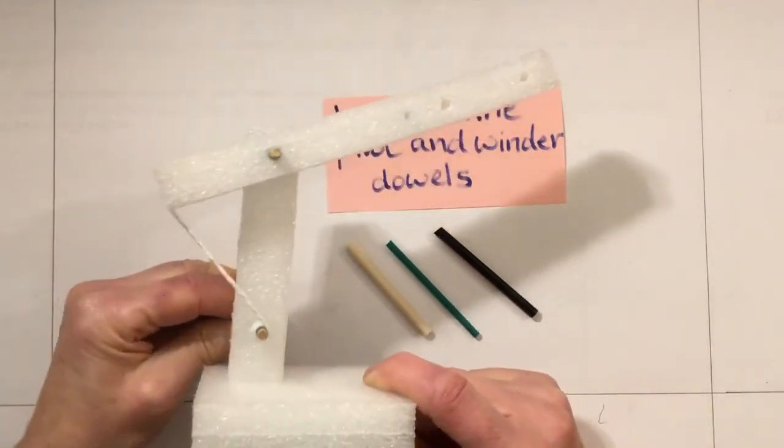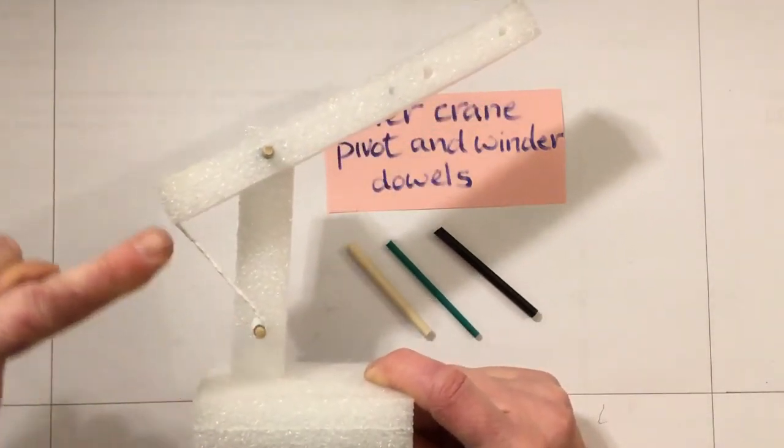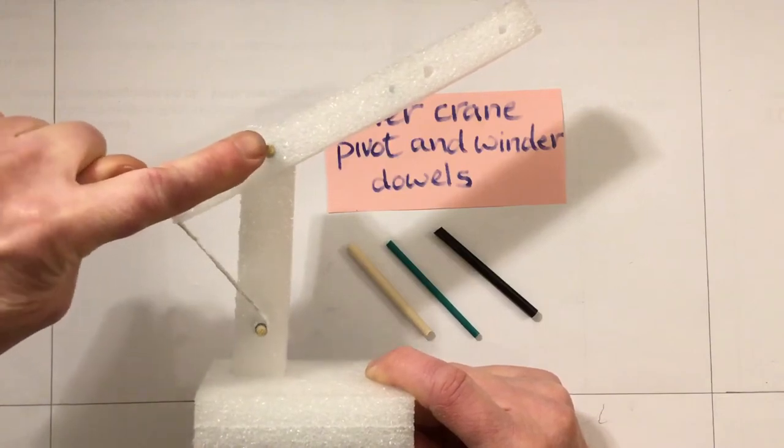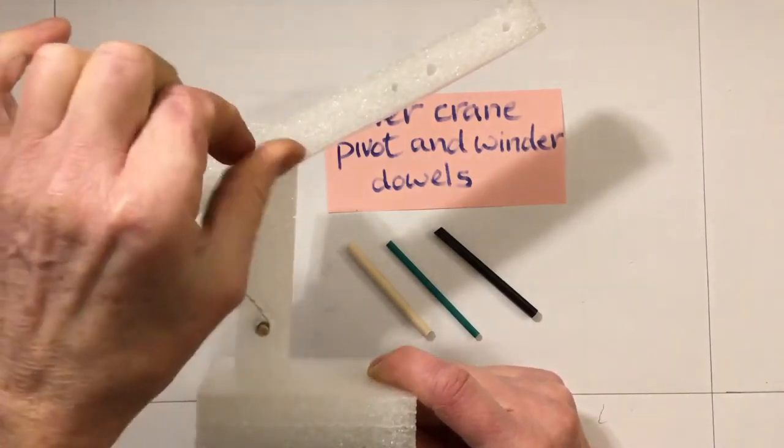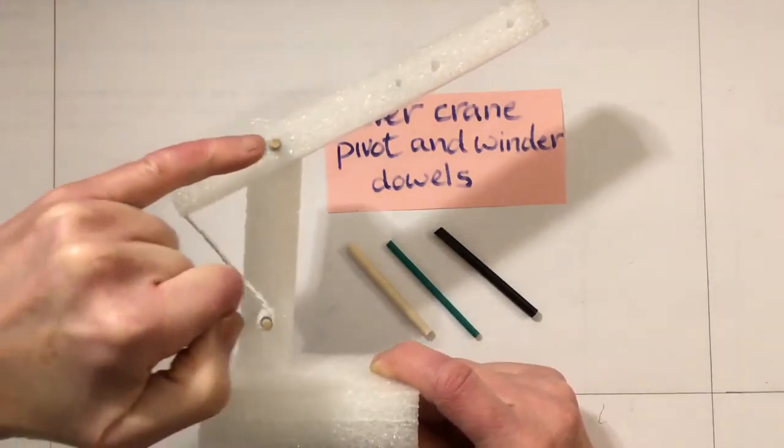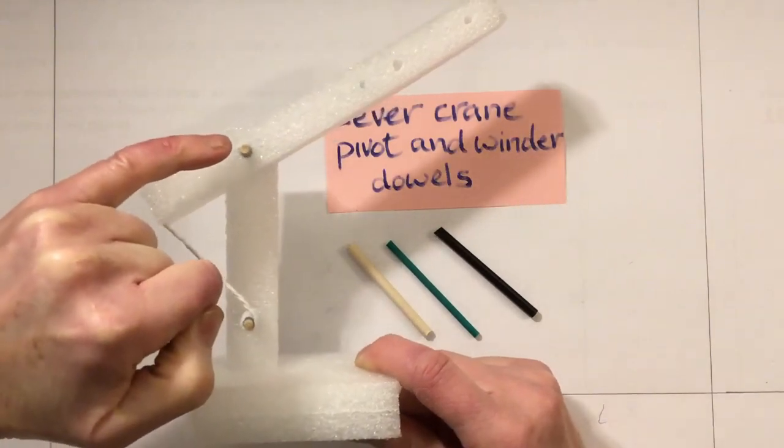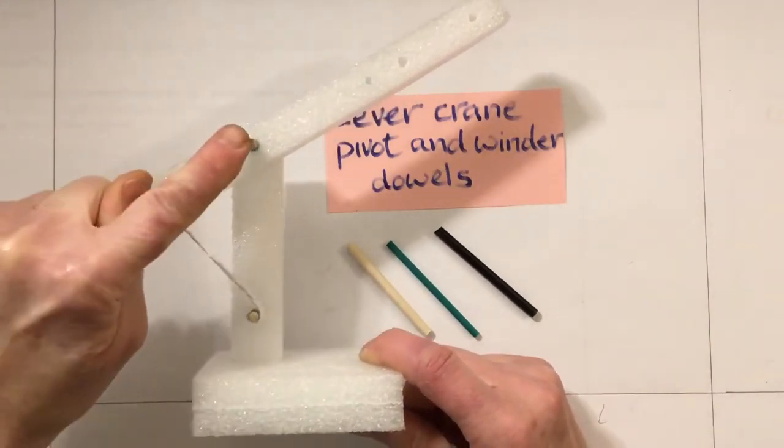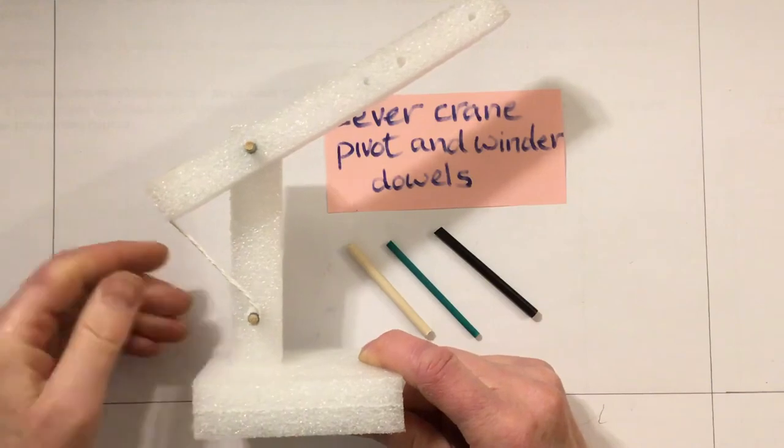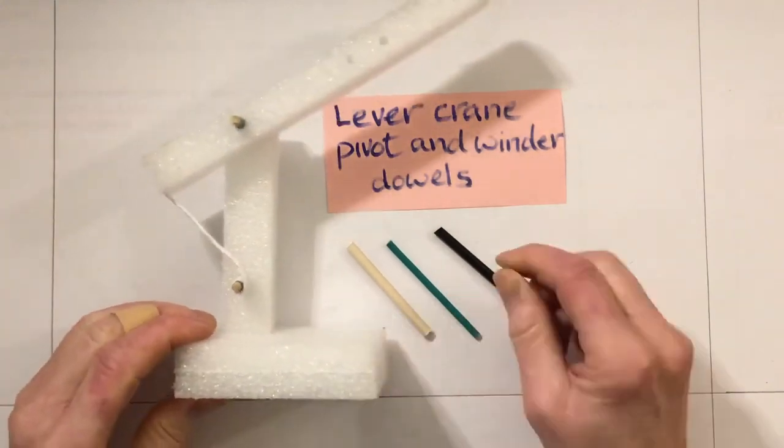But there's another piece of wood here that's not a winder - we're not twisting that one. That would be called a pivot. So the pivot and the winder are usually just rods of some type.